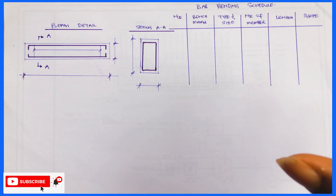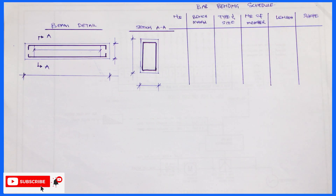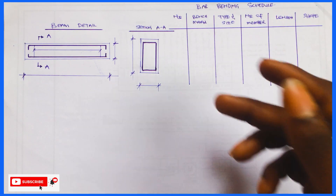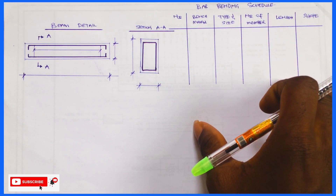The first thing you really need to know is: what is a bar bending schedule? Why are you creating a bar bending schedule? Who is to prepare it? Then we move into knowing what a cover is, what a crank is, then we go deeper into the reinforcement detail, the beam detail, the section, and then the bar bending schedule table itself.